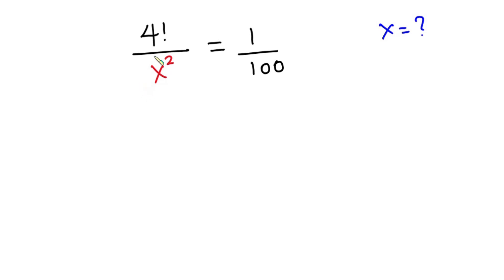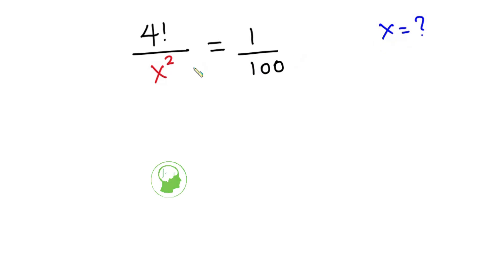Hello everyone! In this video, we have this nice problem: 4 factorial over x squared is equal to 1 over 100, and we have to find the value of x. Before we begin, as always, pause the video and try first.